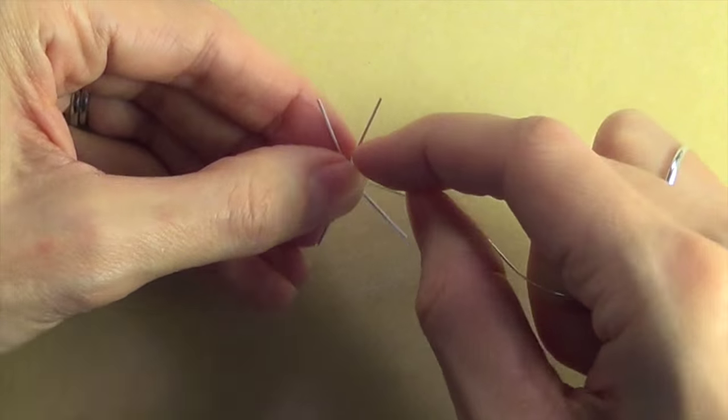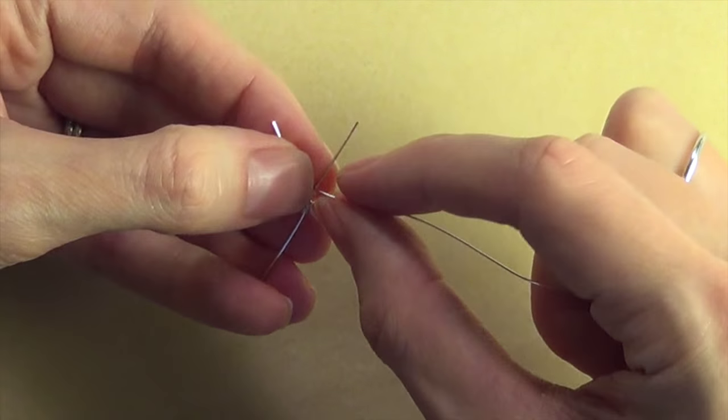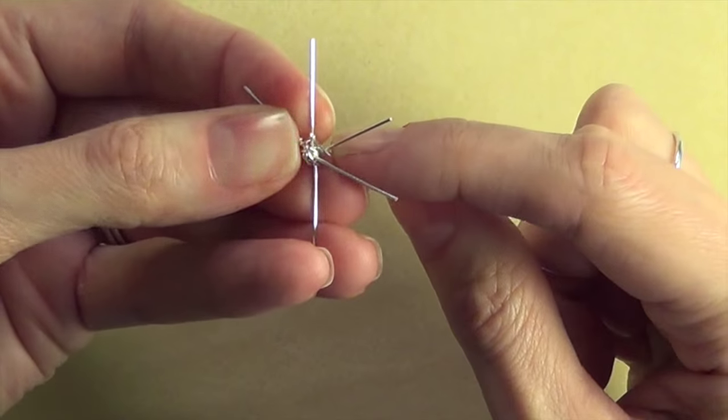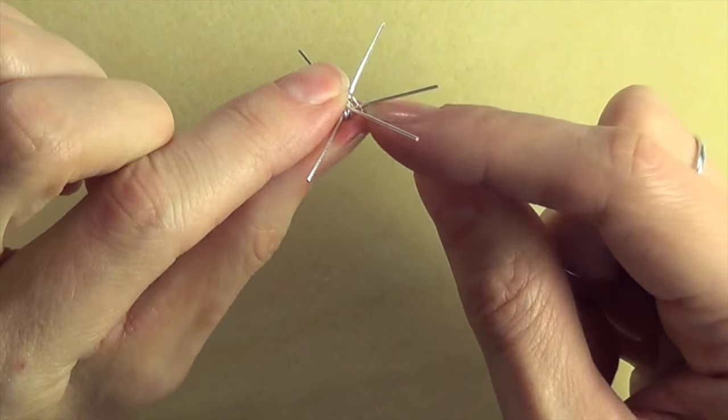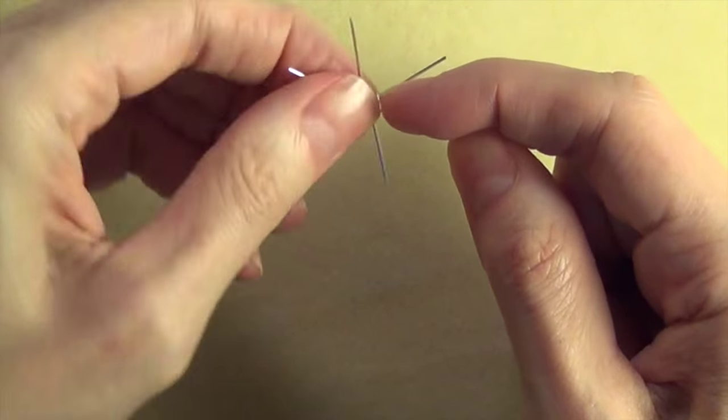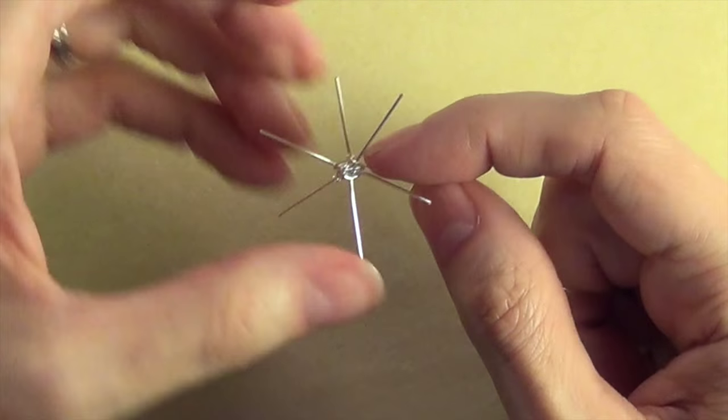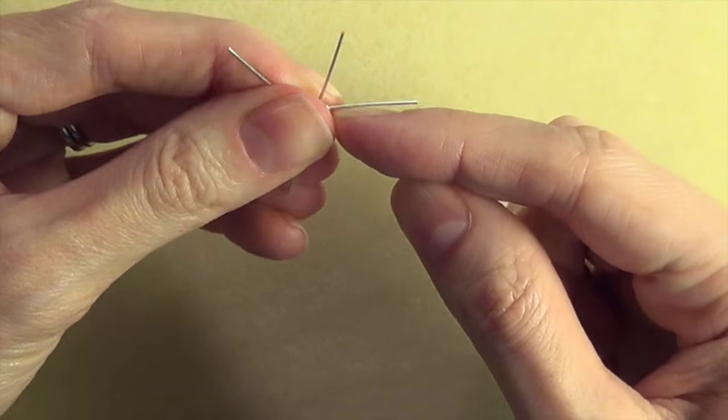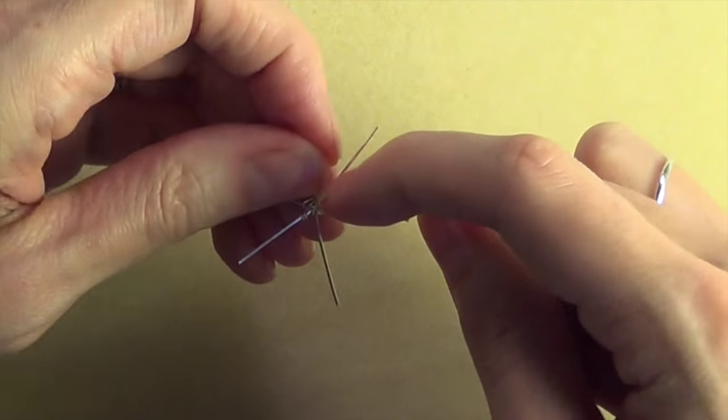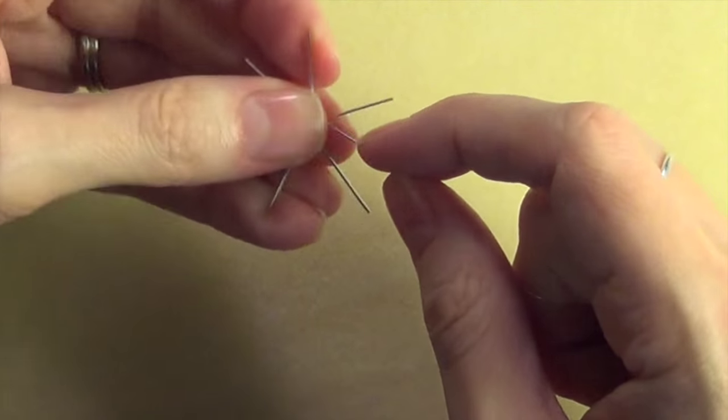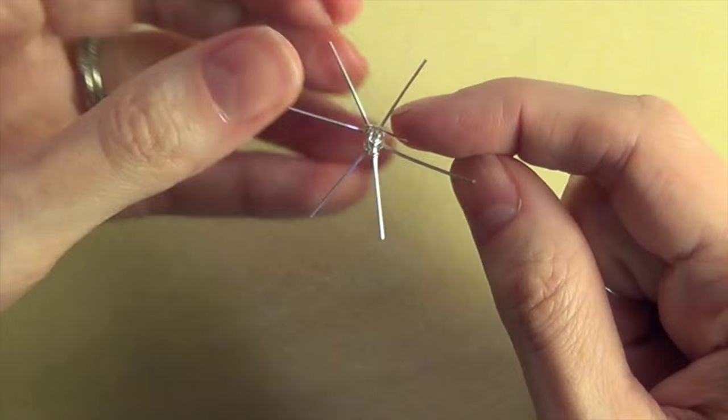Tuck that end down so we don't have any sharp pieces sticking out. Grab that long piece of wire between your thumb and forefinger and bring it over the front of the next spoke. Grab the piece by the center with your other hand and twist it all the way around once so that you come back to the front over the next spoke and around all the way back again to the front and you just keep twisting and repeating.